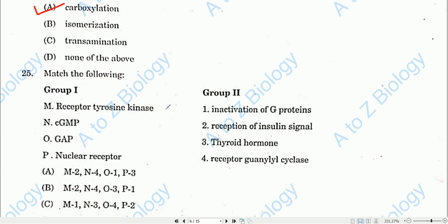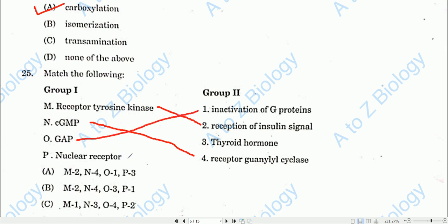Question number twenty-five involves matching Group 1 and Group 2. Receptor tyrosine kinase is related to reception of insulin signal; cGMP is associated with receptor guanylyl cyclase; GAP is associated with inactivation of G protein; and nuclear receptor is associated with thyroid hormone. Option A will be the correct one.